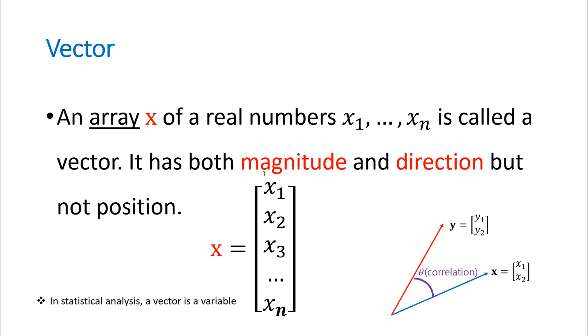So if we consider two vectors, we define the closeness between two vectors as correlation.